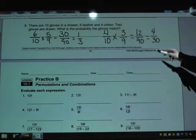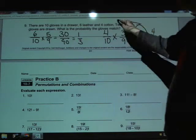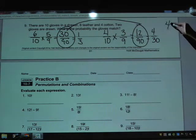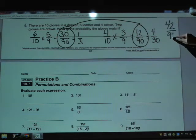But again, all we're doing now is adding these probabilities together, and that gives us a 42 out of 90 chance of pulling the same type of glove, whether it be leather or cotton, in a row. You can reduce that if you want.